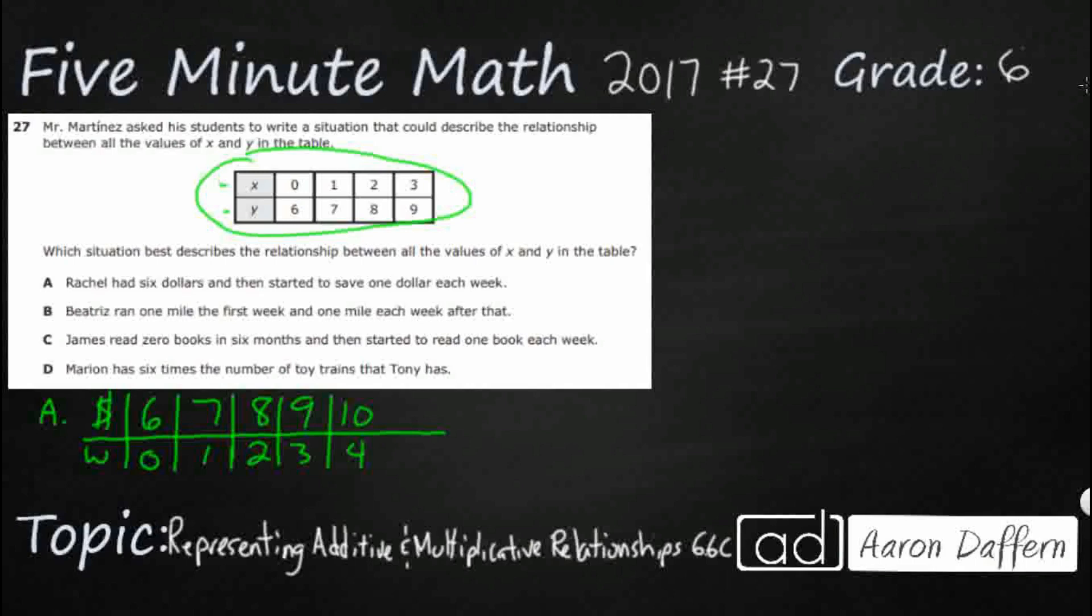So even though I flipped them upside down, this actually kind of looks like what we have right here. This is an additive relationship because we're just adding $1 a week. So this might be it. It looks like I've got the same values there. Let's look at the rest.